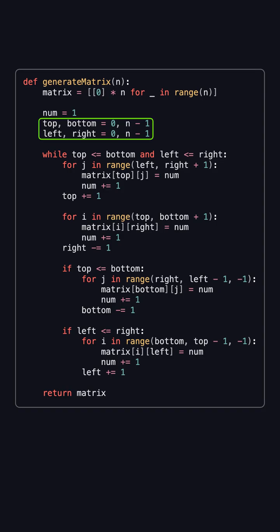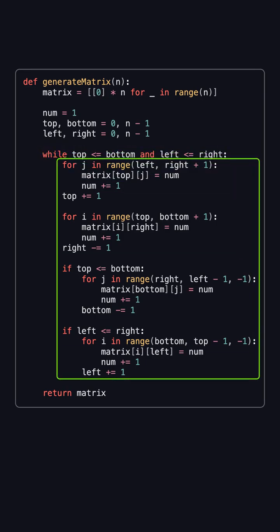Then we define the four boundaries—top, bottom, left, and right. As long as top is less than or equal to bottom, and left is less than or equal to right, we keep filling in the spiral.